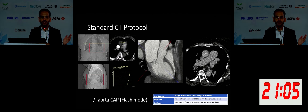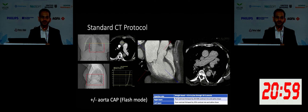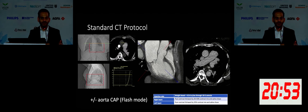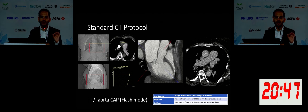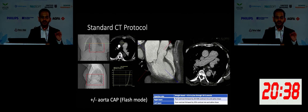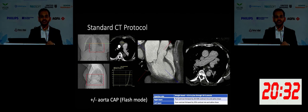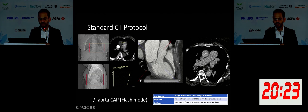My advice to the tech is always that if you don't identify the ascending aorta, the descending aorta is always going to be the descending aorta — the largest vessel alongside the spine. If you can't find the ascending aorta, place your ROI in the descending aorta. Our threshold is set at 100 Hounsfield units. After 100 Hounsfield units is reached, the scanner gives an instruction to take a breath and hold it, which triggers the acquisition of the CTA.